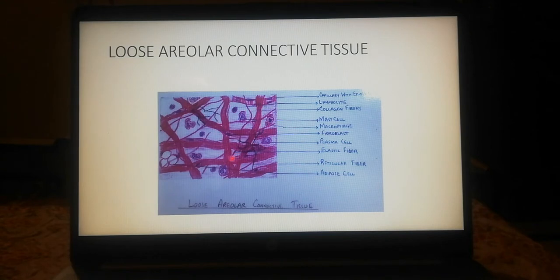The ground substance is dissolved out during the fixing and staining procedure. Therefore, in stained sections, the ground substance appears as small circular or oval areas in which no structure is visible. Due to this appearance, it is also called loose areolar connective tissue.